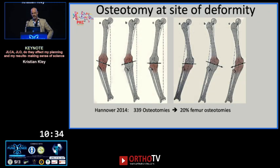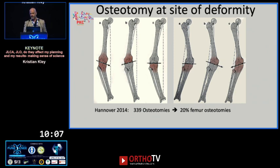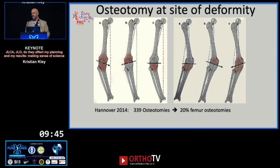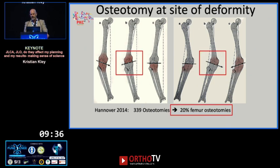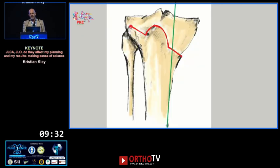We need to define where to put the correction, because the Mikulic line only tells us that there is overall malalignment — it does not tell us where it originated. We need to perform a proper analysis to see whether it's at the femur, tibia, or somewhere else. We checked retrospectively in Hanover in 2014, across almost 340 osteotomies. We found that 20 percent of malalignments originated in the femur, but we had only operated at the femoral site in one percent of cases — meaning we operated 19 percent of patients at the wrong bone.